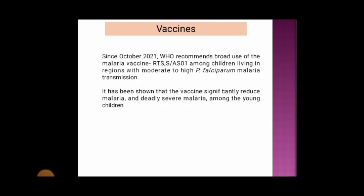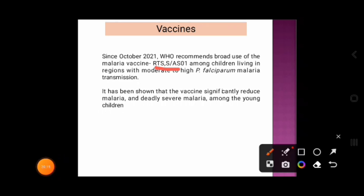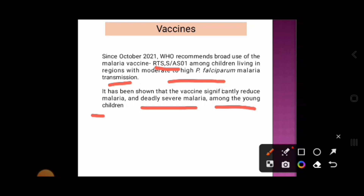Since October 2021, the WHO recommends broad use of the malaria vaccine RTS,S/AS01 among children living in regions with moderate to high Plasmodium falciparum malaria transmission. It has been shown that the vaccine significantly reduces malaria and deadly severe malaria among young children.